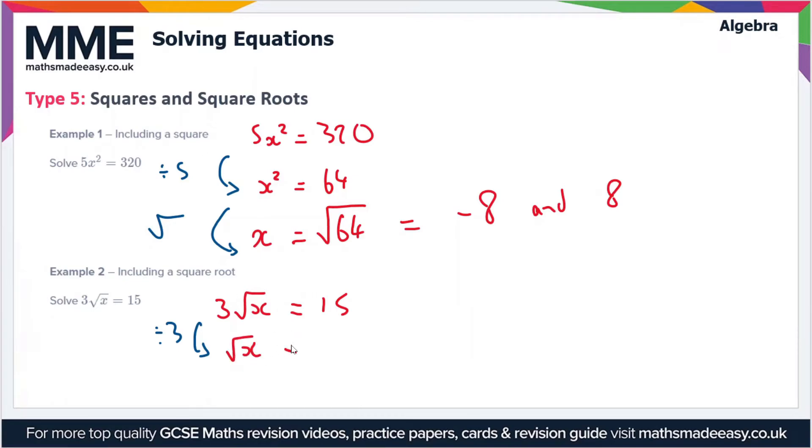The right-hand side is 15 divided by 3, which is 5. So √x equals 5. To remove a square root, we have to square it to get x on its own. We're squaring both sides, so x equals 5², which means x equals 25. That's our final answer.